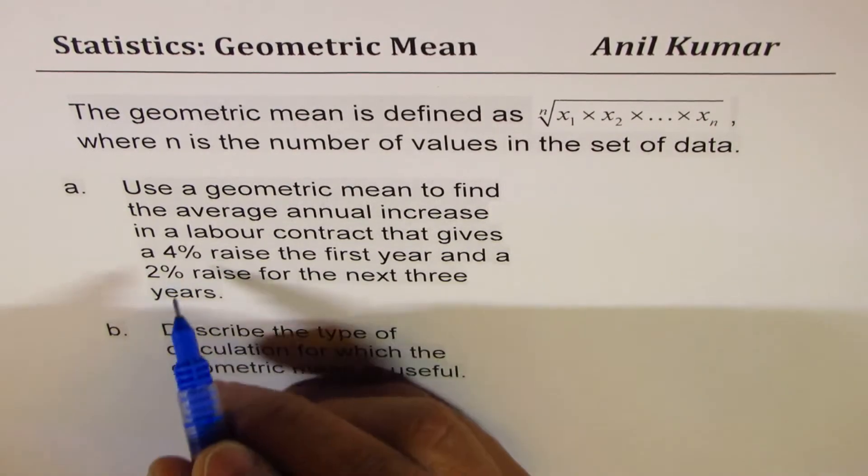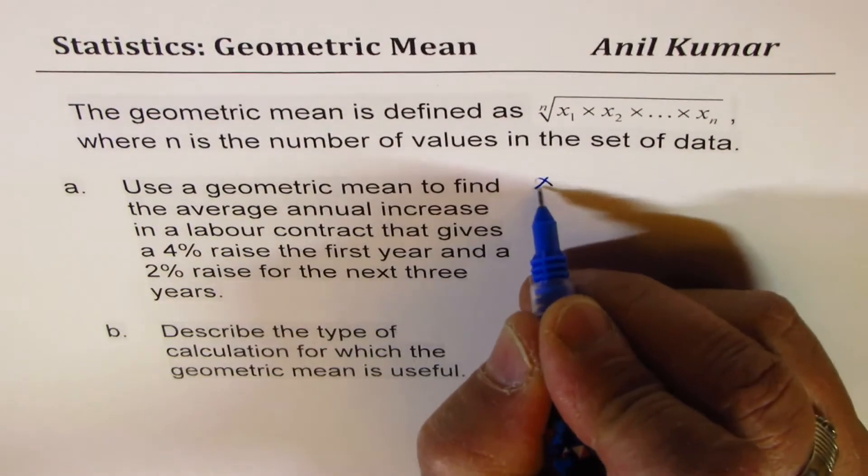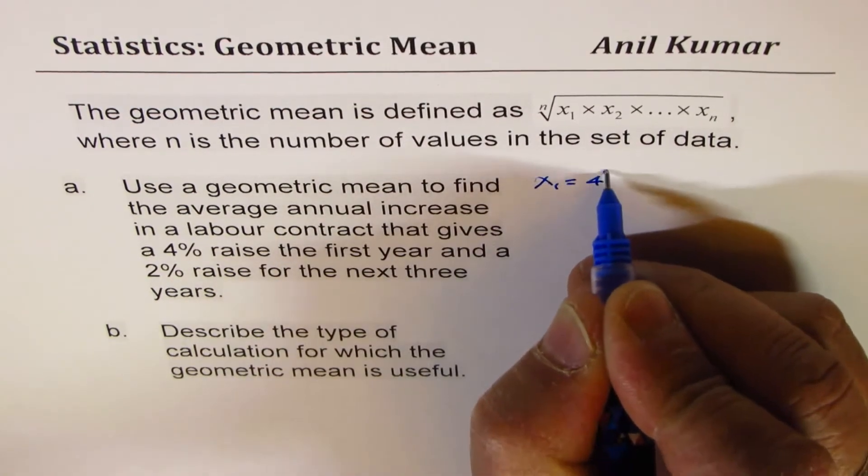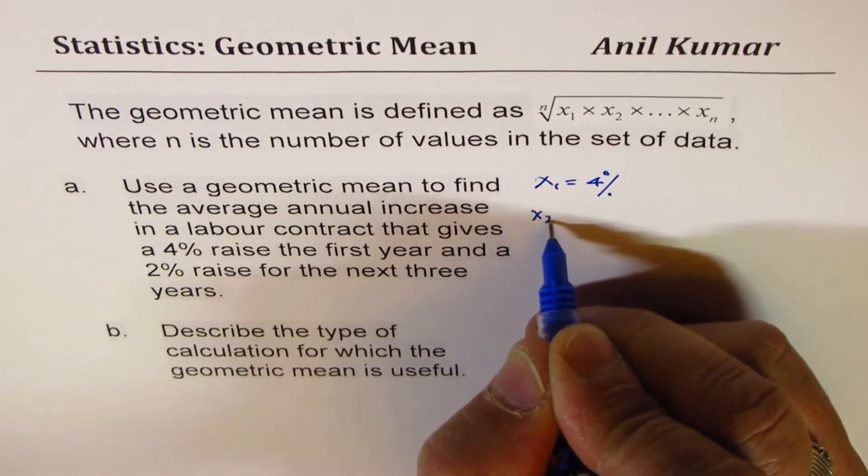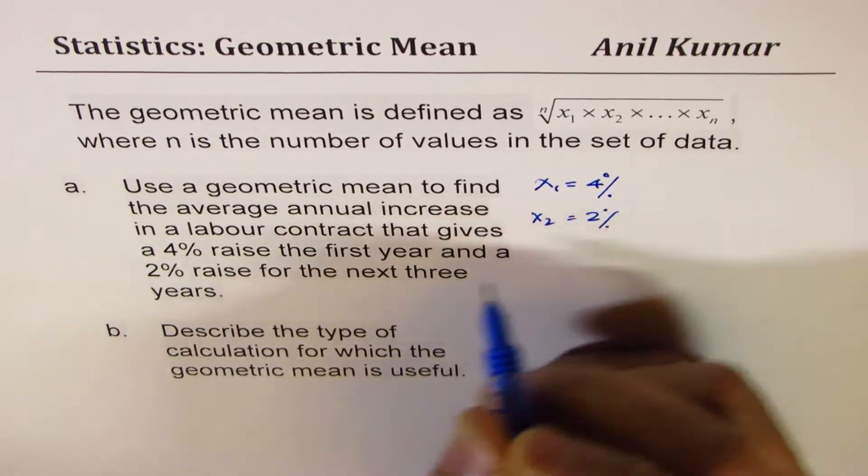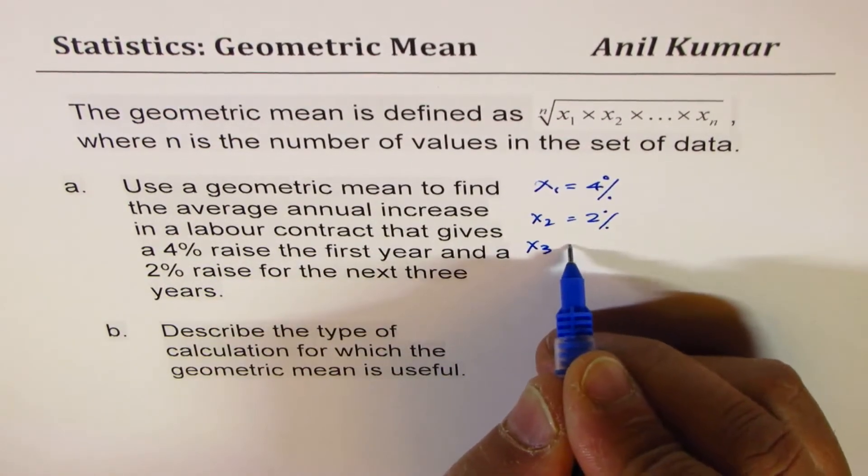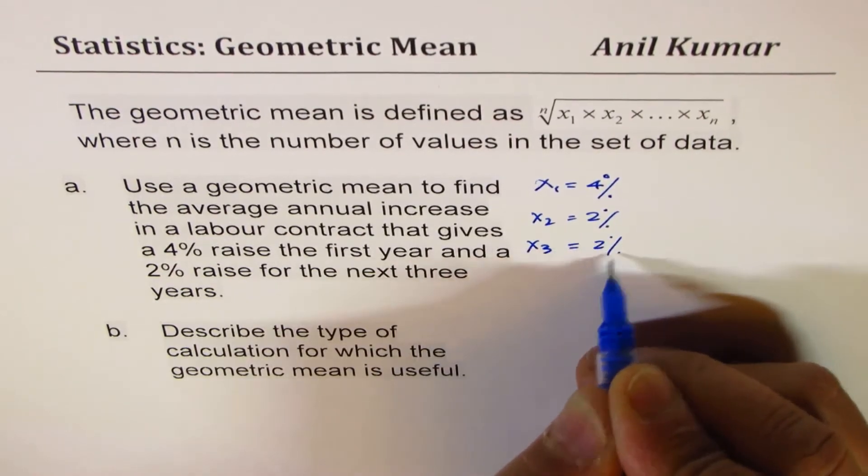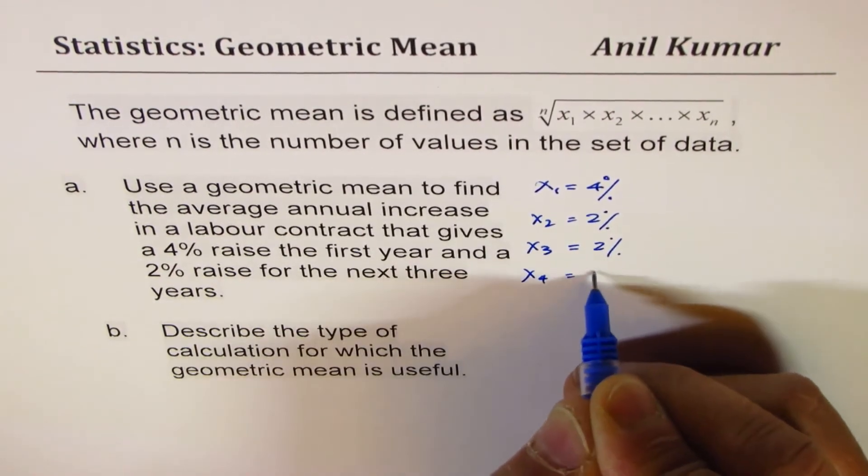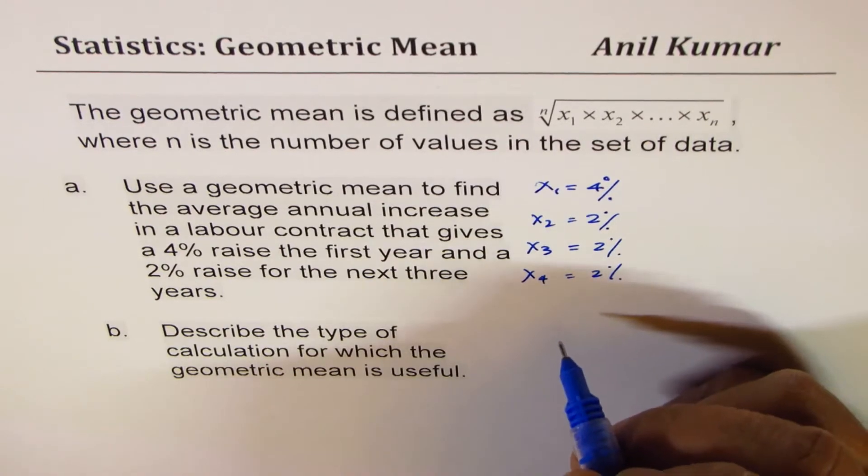Now here, we are given 4 different raises. So we have x1 as 4%. We have x2 as 2%, which is 3 times. So that means x3 is also equals to 2% and x4 is also equals to 2%. So we have 4 different values.